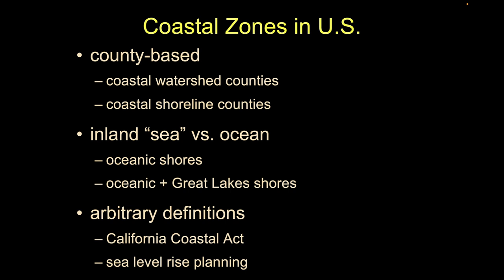We can talk about inland sea versus ocean — sometimes we'll talk about oceanic shores, meaning just the counties or areas that touch the saltwater, in contrast to when we include the Great Lakes. Generally, most academic studies focus on oceanic shores, but for political reasons, if we're talking about national policy, they'll often include the Great Lakes in the shorelines of the U.S. Those are objective measures we can reconstruct at any time.